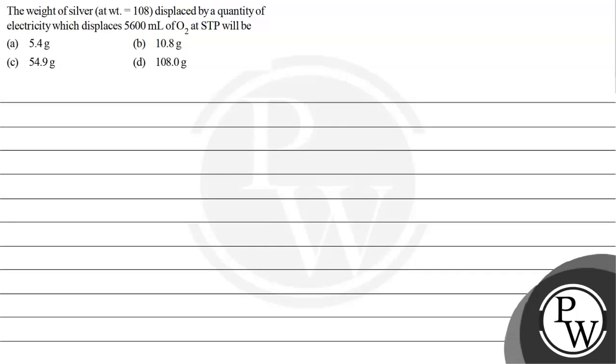Hello guys, let's see the question. The question says weight of silver, atomic weight given 108, displaced by the quantity of electricity which displaces 5600 ml of O2 at STP will be.